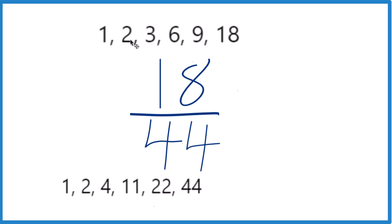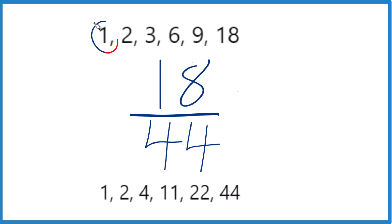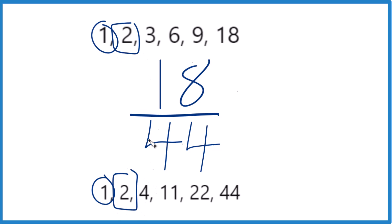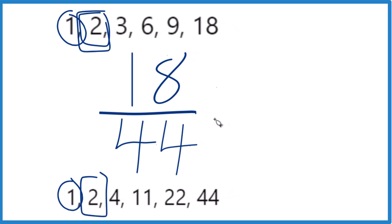So what's the greatest common factor — the one that goes into both of these numbers evenly? We can see that 1 is a common factor, but it's not the greatest, because 2 is also a common factor. Is there anything else in common? 4? No. 11? 22? Nope. So 2 is the greatest common factor.